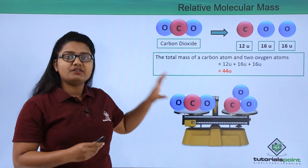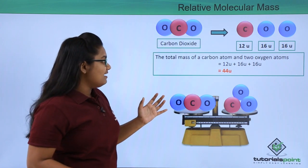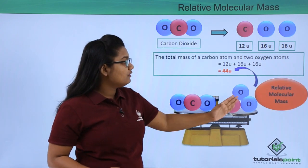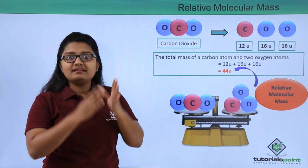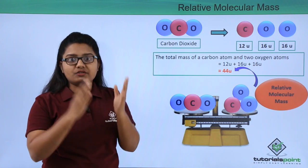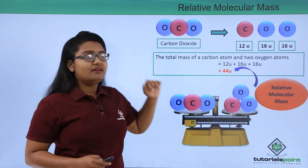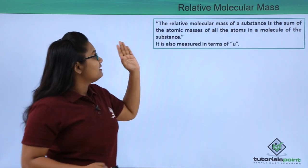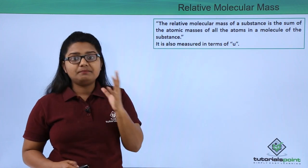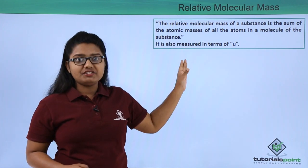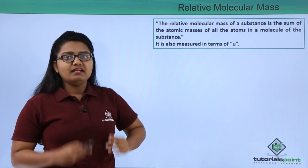This 44u is the mass of the carbon dioxide molecule, obtained by adding the relative atomic masses of its constituent atoms. This mass is called the relative molecular mass. We define the relative molecular mass of a molecule as the sum of the relative atomic masses of all its atoms, and it is measured in units of u (unified mass).